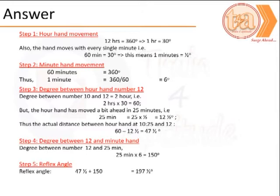The next step is to calculate the minute's hand movements. So in 60 minutes it covers 360 degrees, which means in 1 minute it covers 6 degrees.